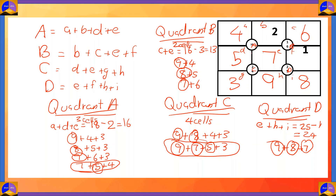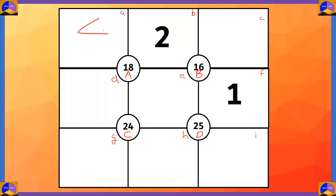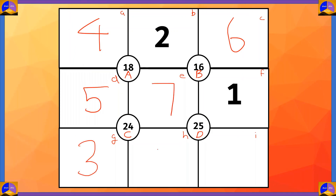The remaining numbers fill in: 3 and 4 go in the remaining cells. No numbers are repeated and each number from 1 to 9 has its own cell. Verification: 4+2+5+7=18, 2+6+7+1=16, 7+1+9+8=25, 5+7+3+9=24. All quadrant sums check out. Let's fill in the final numbers: 4, 2, 6, 5, 7, 1, 3, 9, 8. Voilà — we have solved this puzzle!